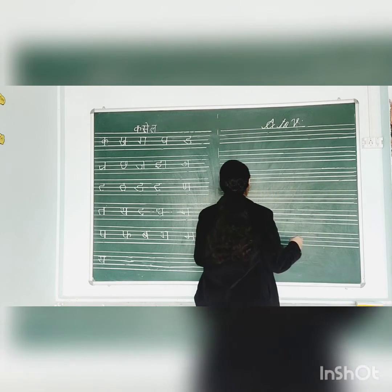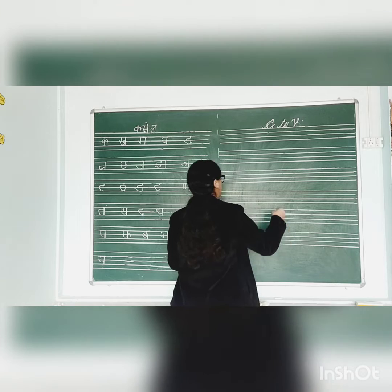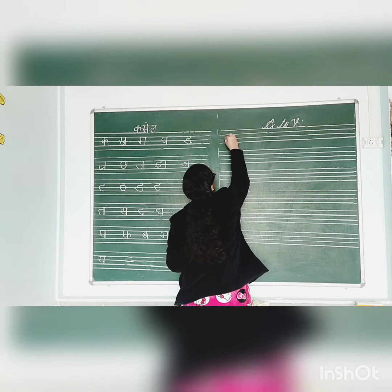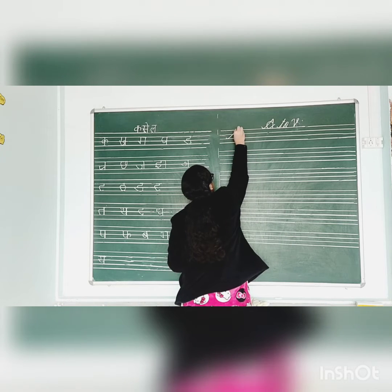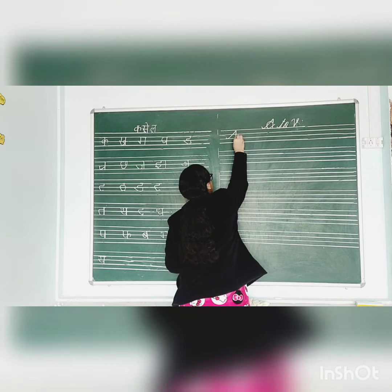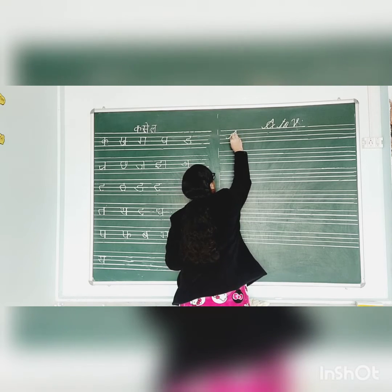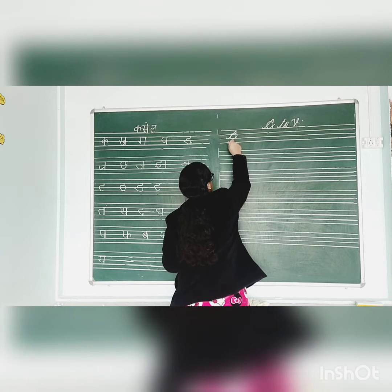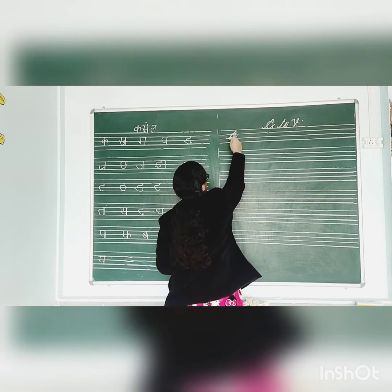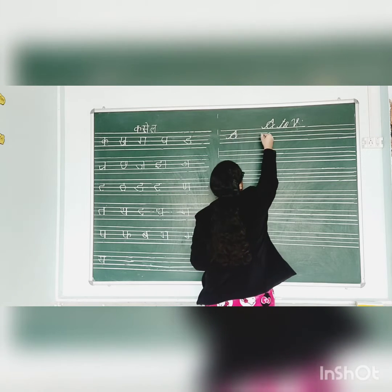Cursive A. Mingo Curve. Slanting line. Another slanting line. Back. Round. Then slanting line. Cursive A.